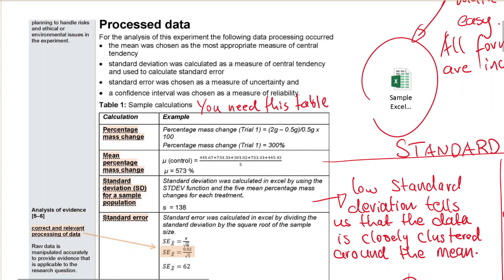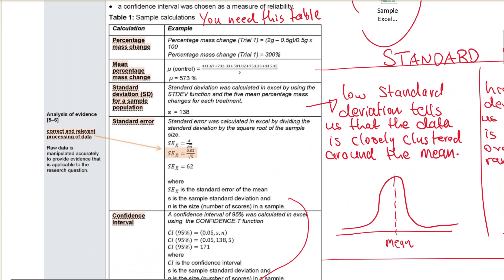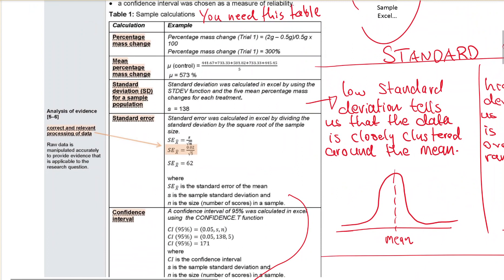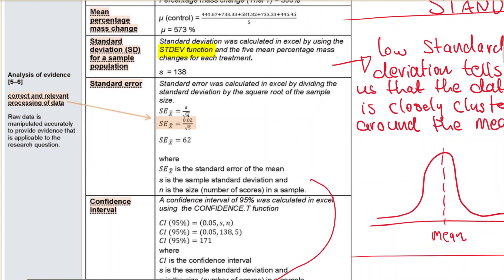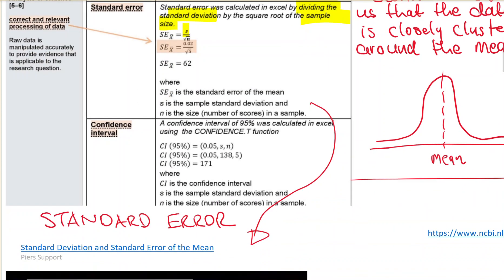This is just process data. Let's talk about the overview - what you need. A lot of people don't have this table, which just shows your formulas. How did you calculate percentage mass? How did you calculate the change in mass? For standard deviation, they don't show the calculations - they just say in Excel we use the STDEV function. For standard error, it's calculated by dividing the standard deviation by the square root of the sample size.